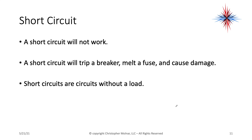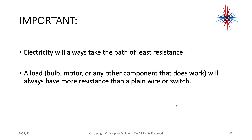Now we have our fourth type of circuit — it's called a short circuit. A short circuit will trip a breaker, melt a fuse, and cause damage. Short circuits are circuits without a load. Electricity will always take a path of least resistance. A load — which could be a bulb, motor, or any other component that does work — will always have more resistance than a plain wire or switch.